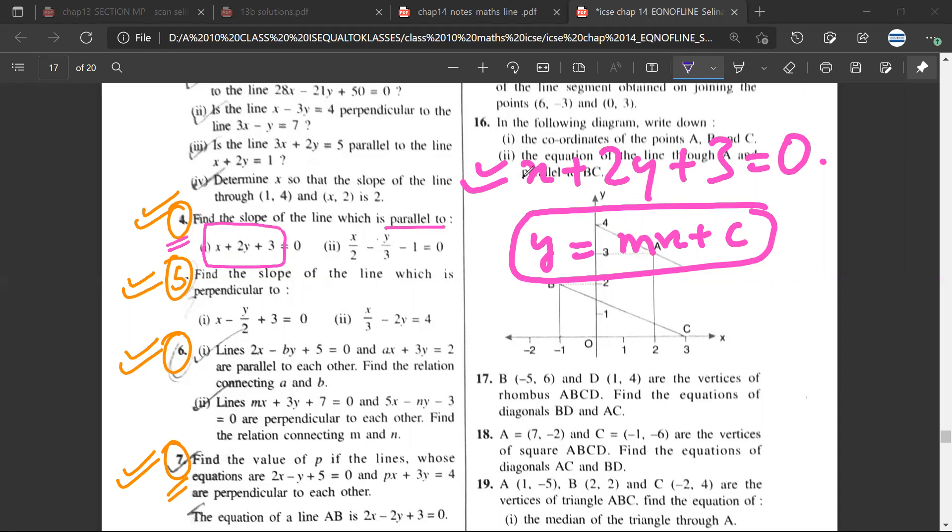This equation you have to convert to y equals mx plus c. So x plus 2y equals 3. Now step by step, move x to the other side: 2y equals minus x minus 3, so y equals minus half x minus 3 by 2.